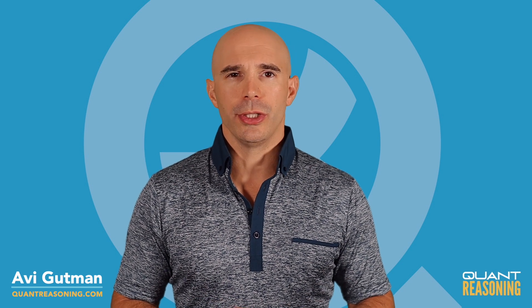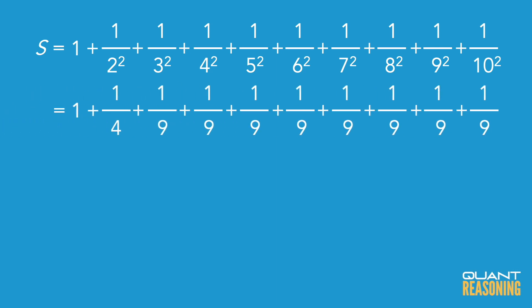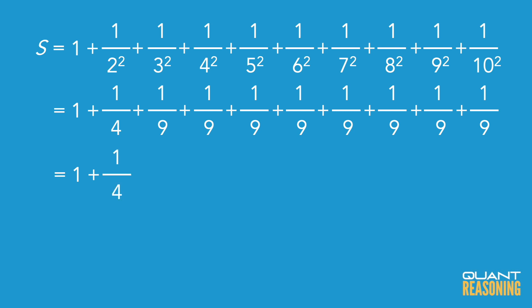Since our basic trick failed, I would actually start adding up the first few terms and then estimate the remaining ones. So I'd start with just one plus a quarter, which is one and a quarter. The remaining eight terms are one ninth and then a bunch of terms smaller than one ninth. If I pretend they're all one ninth, that's eight ninths altogether.